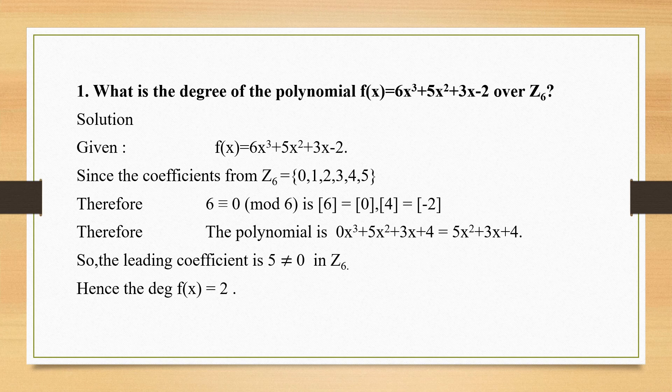Now, Z6 is mentioned here, so there is some restriction. Whenever a modulo set is given, try to write down the elements of that particular modulo set. Z6 will have elements starting from 0 to 5, totally 6 elements — 6 should not be contained there. Now I will check whether this polynomial satisfies over Z6. Looking at the equation, I see that 2 is inside the set, so it can be accepted. 3 is also inside the set — it can be accepted. 5 — yes, it is there inside the set, so that can be accepted.